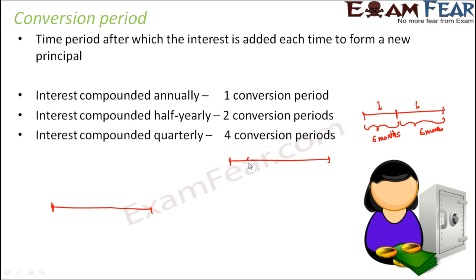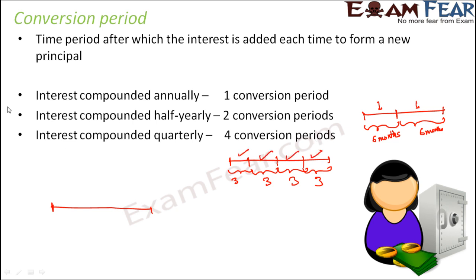When you say the interest is compounded quarterly, that means the interest is divided into four quarters. Each quarter is of three months duration: three months, three months, three months, and three months. For the first three months your principal remains the same; for the next three months your principal becomes the amount of the first quarter; for the third quarter your principal equals the amount of the second quarter; for the fourth quarter it equals the amount of the third quarter. So in this case you have four conversion periods.